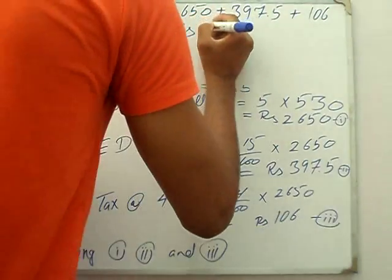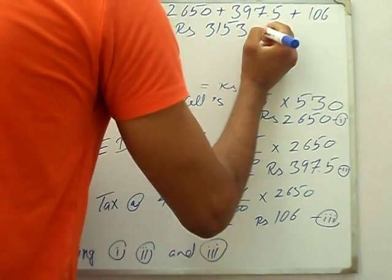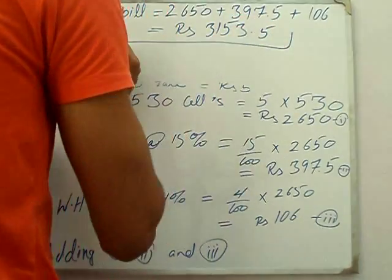Equals 3153.5. The final telephone bill is Rs 3153.5.